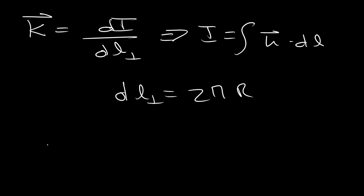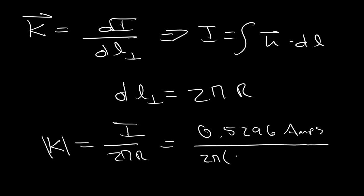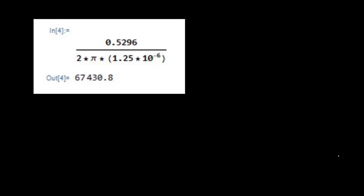So the magnitude here of our surface current density is equal to I divided by 2π R, which is really just equal to 0.5296 amps divided by 2π times 1.25 times 10 to the minus 6 meters. And when we calculate that, you can see from this cell, we get the following as the magnitude of our surface current density. And again, we know it has to be pointing in the same direction as our current.